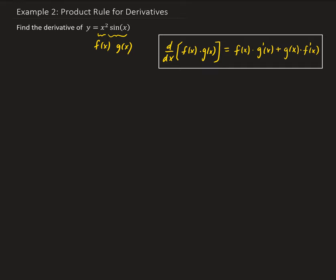So dy/dx is going to be equal to f of x, which is x squared, times the derivative of sine x, plus g of x, which is sine x, times the derivative of f, which is going to be—f for this function is x squared.